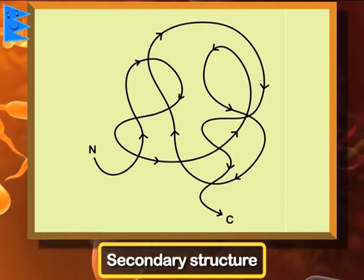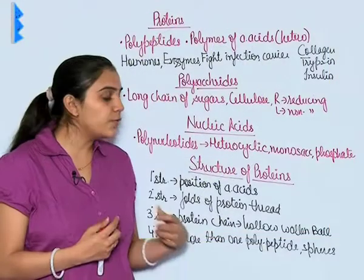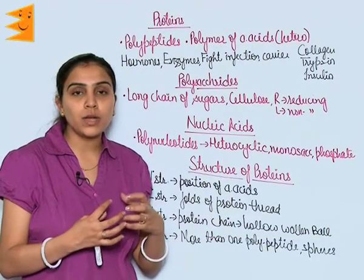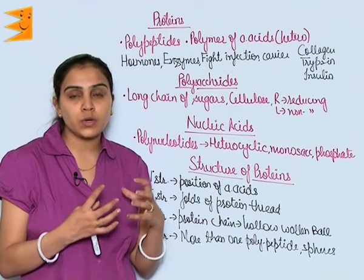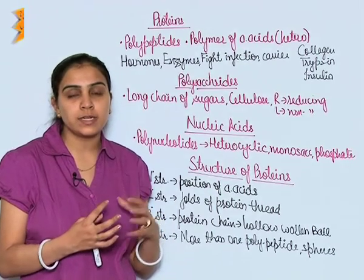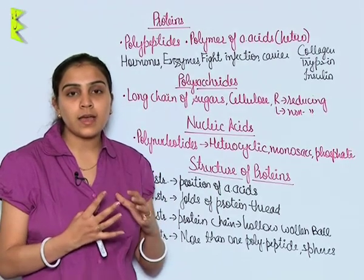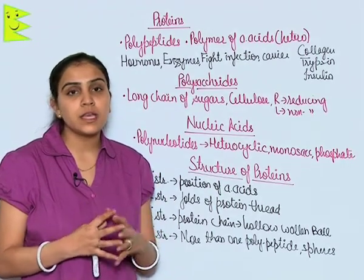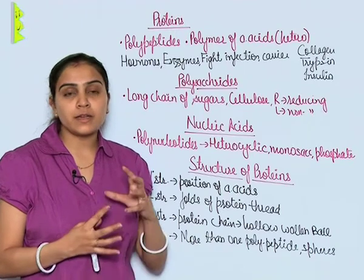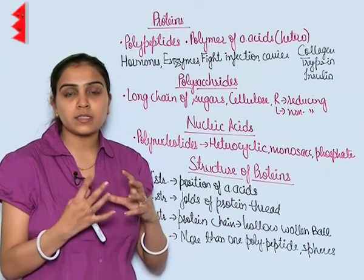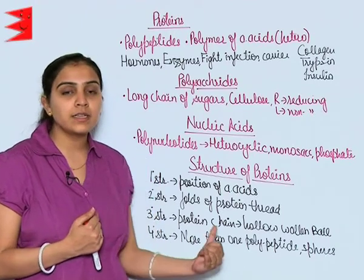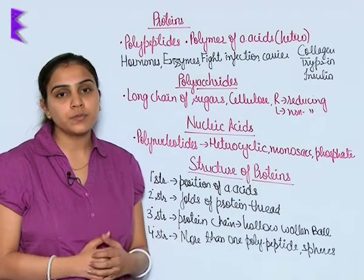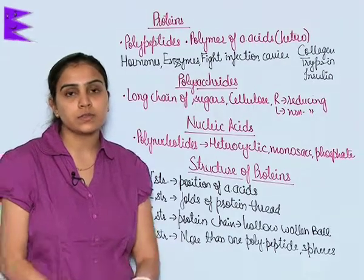Quaternary structure. When there is more than one polypeptide or subunit present, they get arranged in the form of spheres, and the spheres are stacked over each other, thus giving rise to the quaternary structure of proteins.